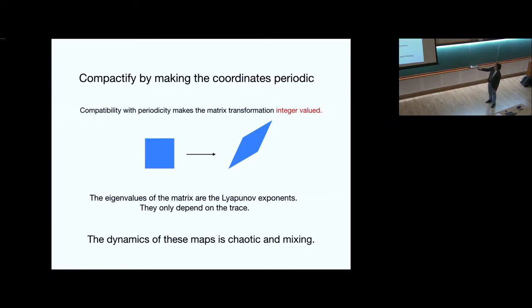So when you're doing classical physics, this is just linear physics except that you're kind of mapping this thing back onto itself. And it is known that the dynamics of these maps classically are chaotic and mixing. And the eigenvalues of the matrix that you have, these A, B, C, D, are Lyapunov exponents. And they only depend on the trace. And you can compute everything analytically. So people have spent a lot of time studying these objects because they're an ideal toy model of chaos.